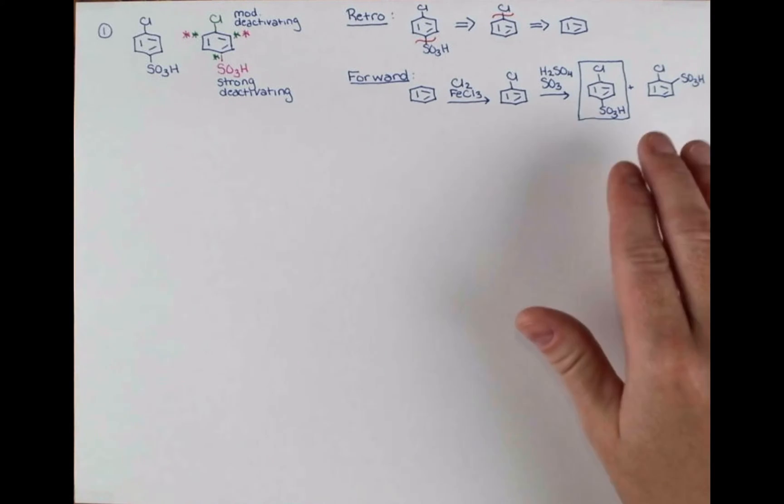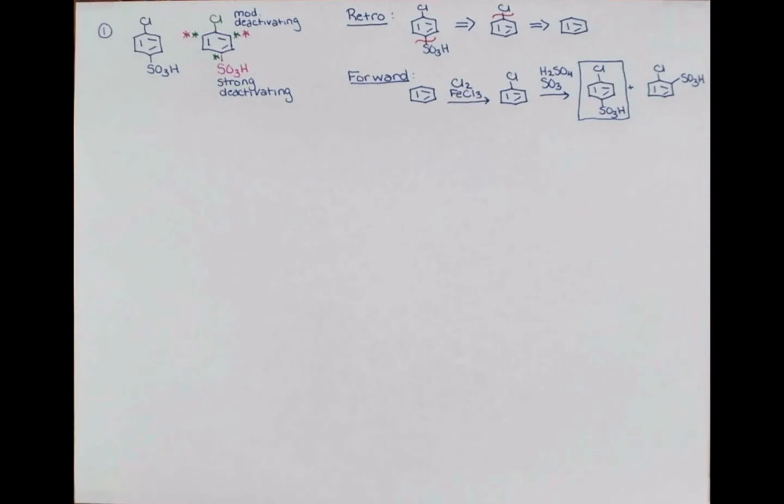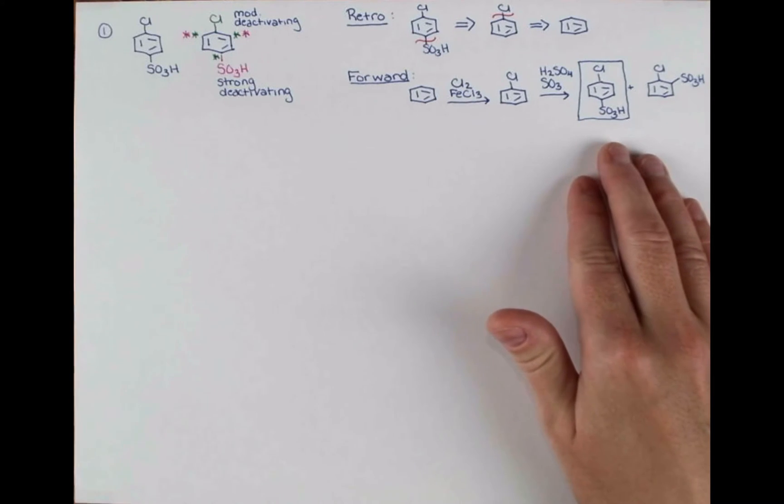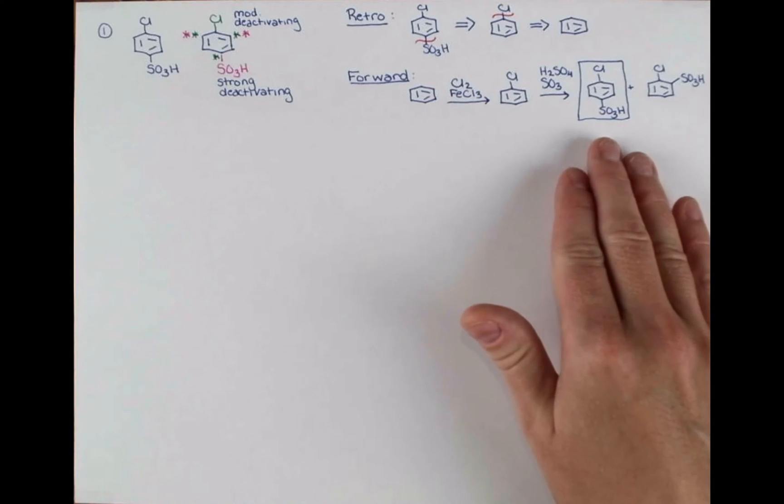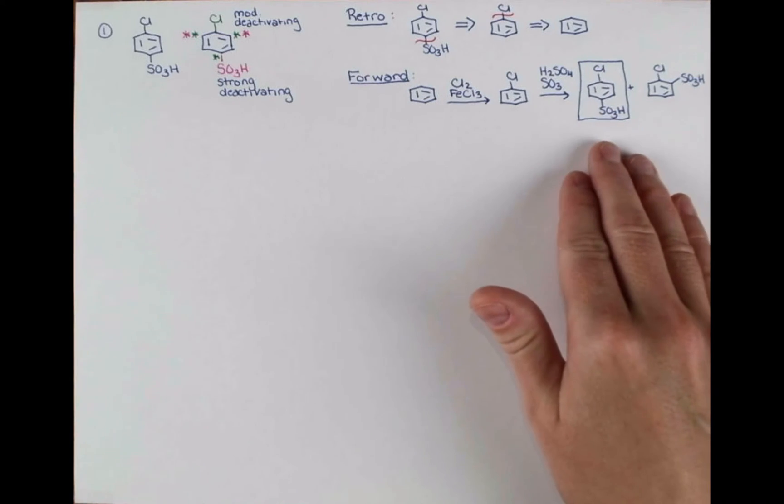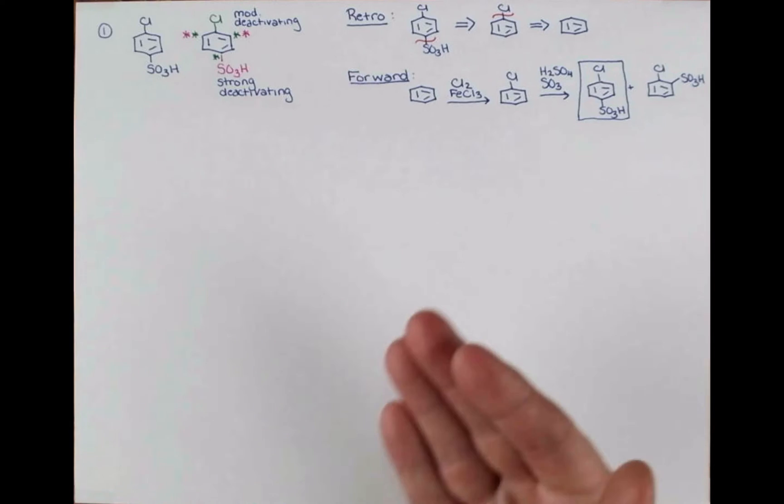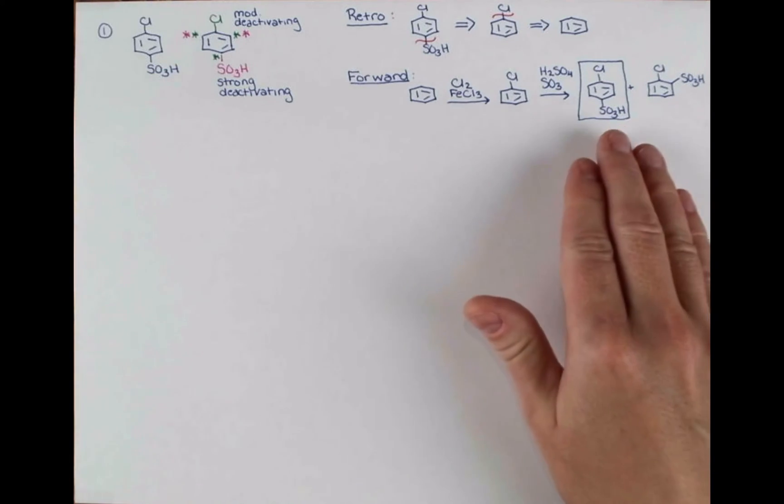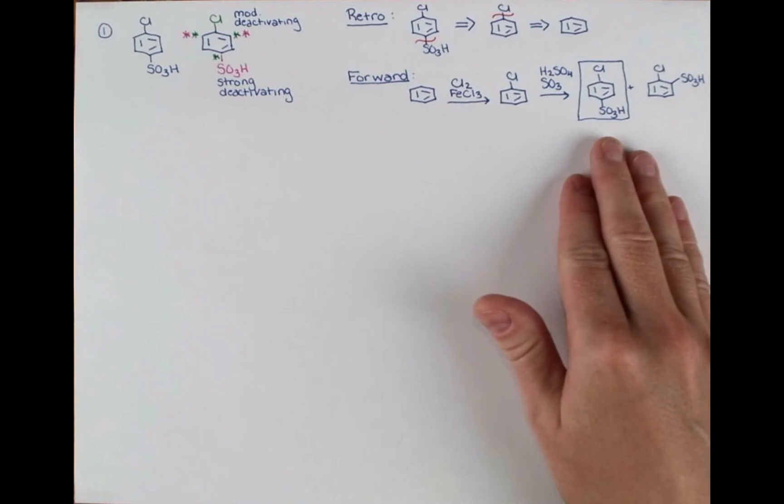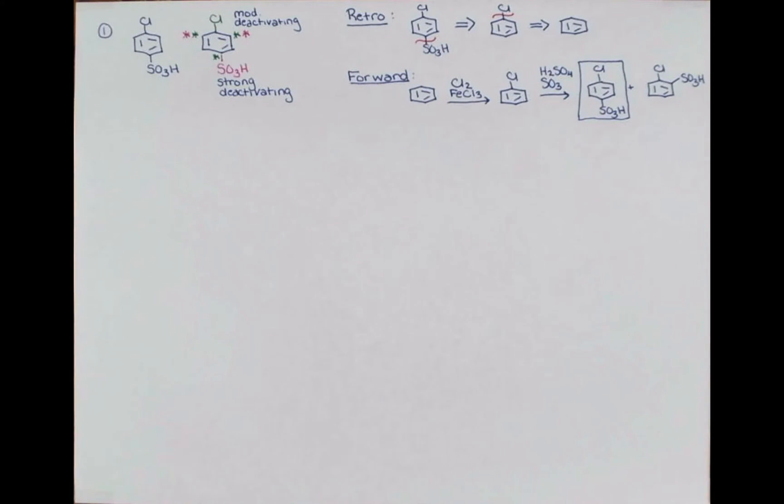Now one thing I haven't mentioned to you yet is that the sulfonation reaction is actually reversible. So if we take these products and warm them up in sulfuric acid, we can get this group to leave. And so in this case, it was great. We put it in the position that we wanted to predominantly because this para product forms more readily. However, in some cases, we might be able to install this group to control reactivity and then remove it later. Let's try an example to see if we can apply this new information.